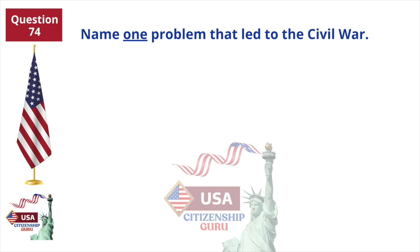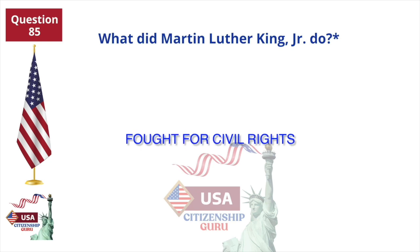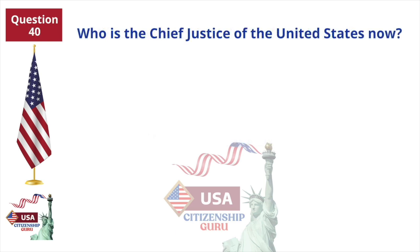Name one problem that led to the Civil War. Slavery. What did Martin Luther King Jr. do? Fought for Civil Rights. Who was president during World War I? Woodrow Wilson. Who is the Chief Justice of the United States now? John Roberts.